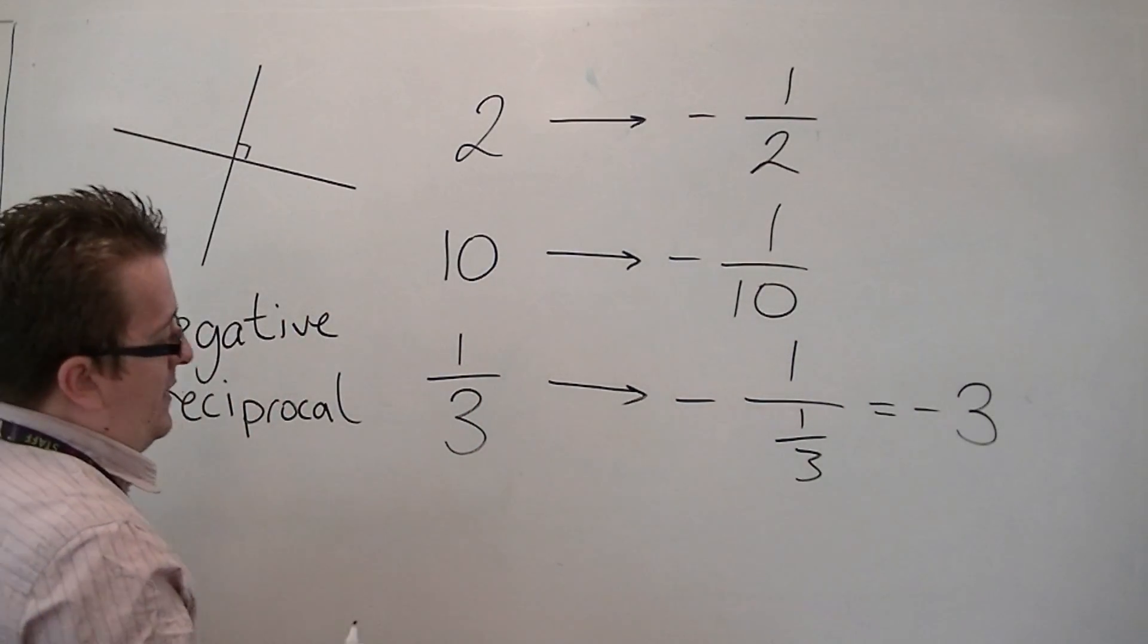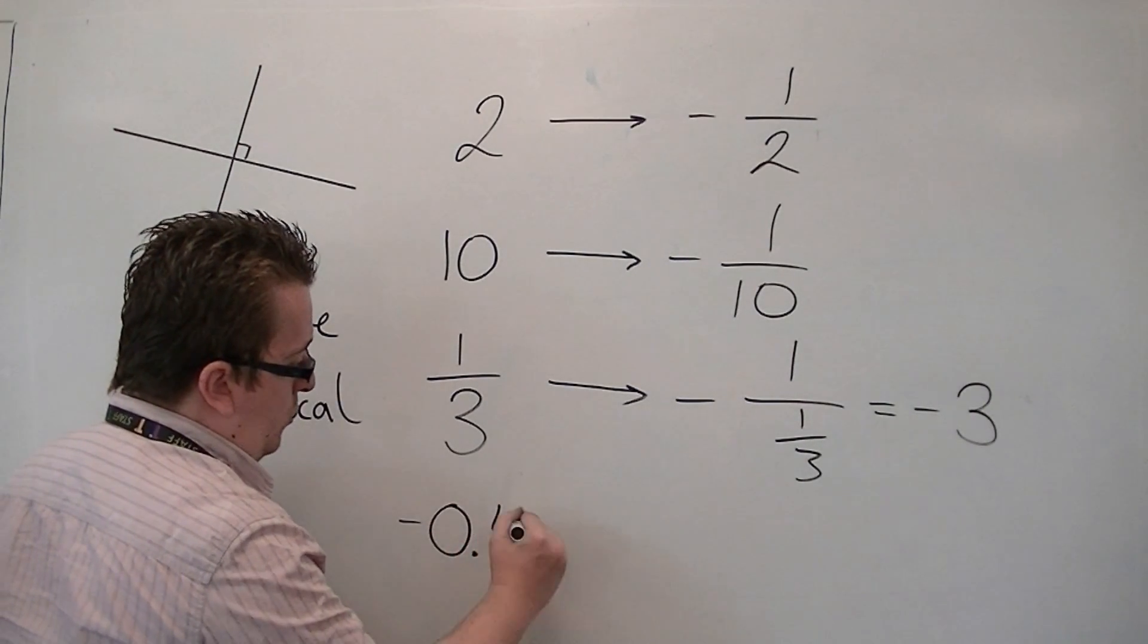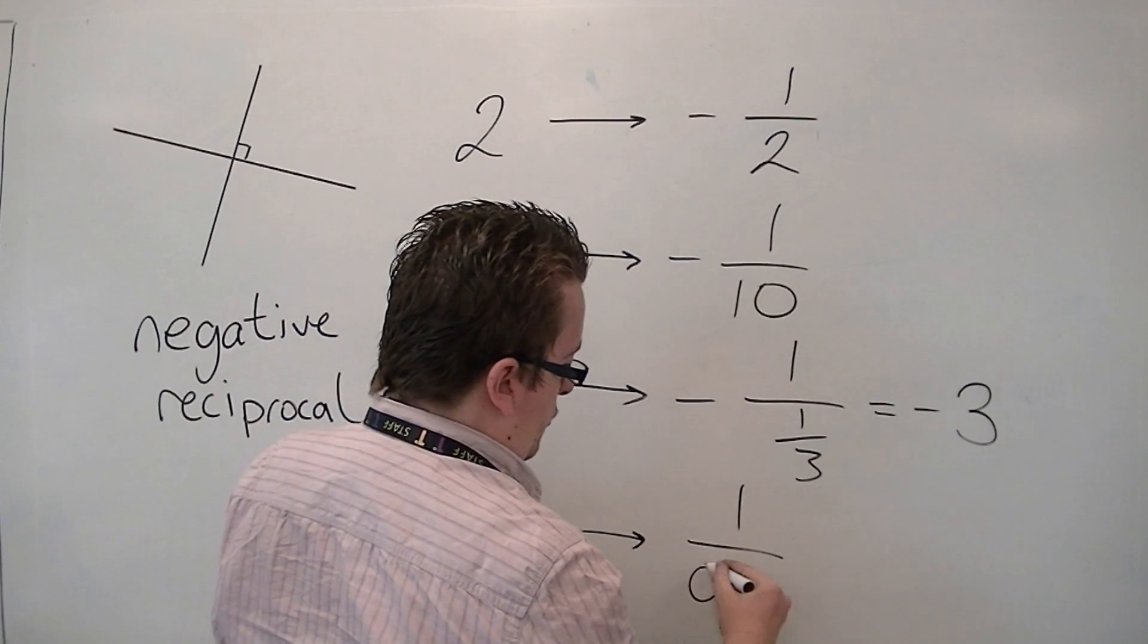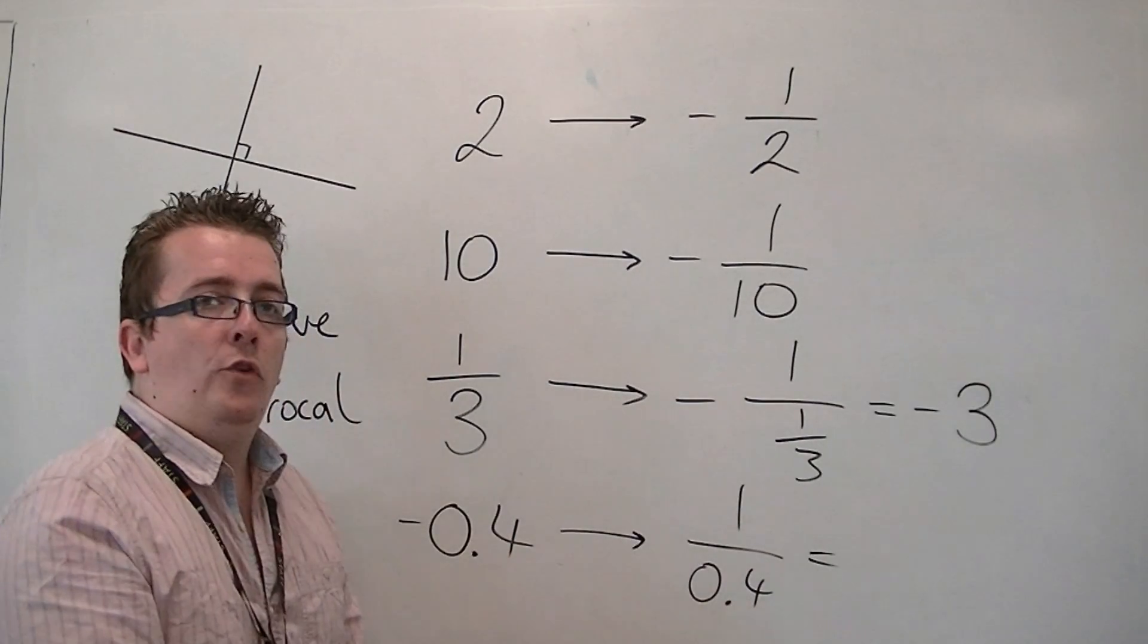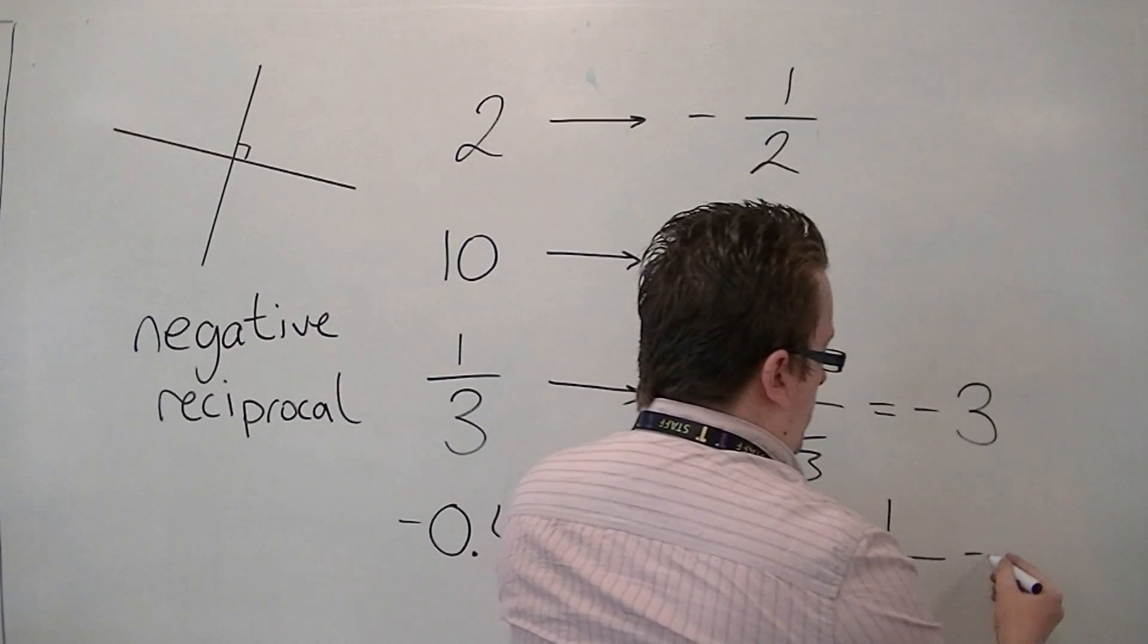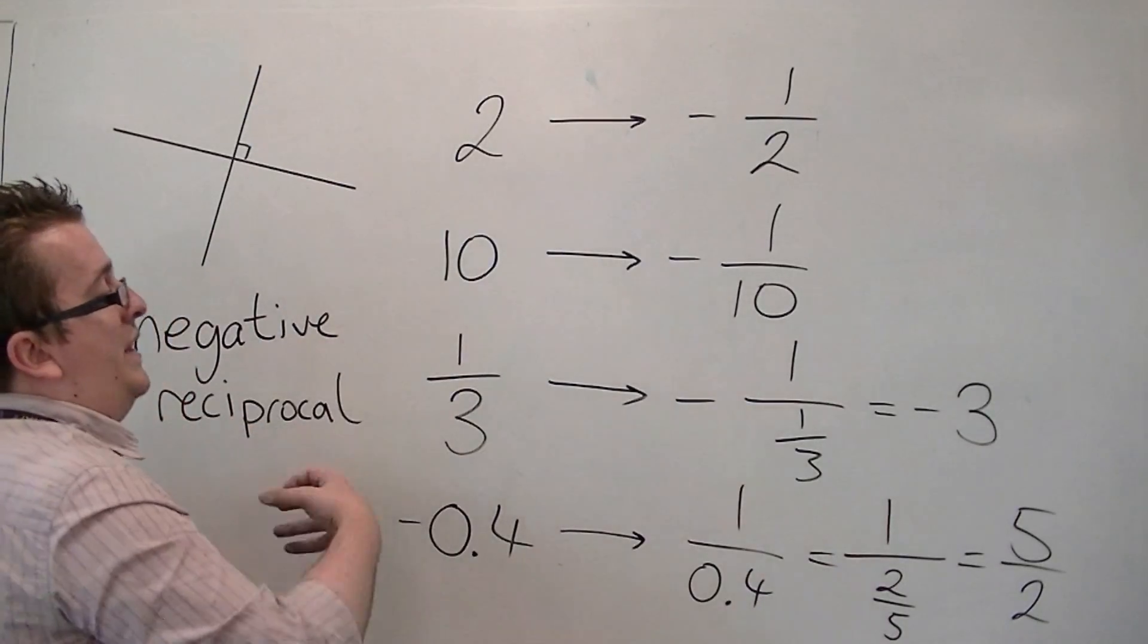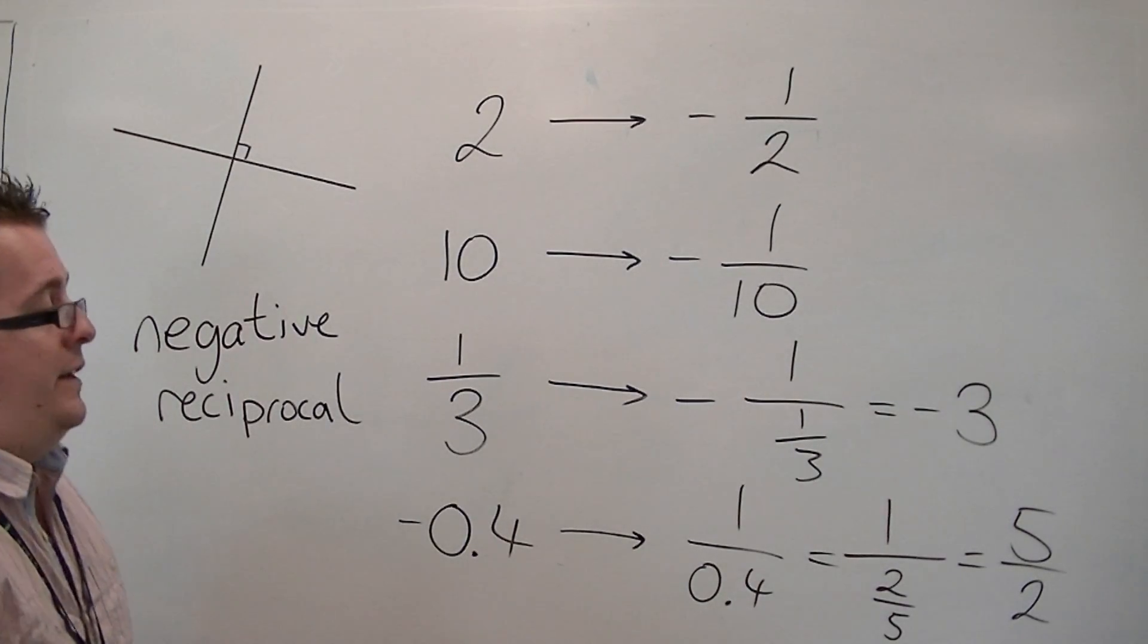And if you had, let's say, minus 0.4, for example, then the negative reciprocal of that would be positive 1 over 0.4. Now, 0.4 is 2 fifths. So, that is 5 halves. So, converting numbers into the negative reciprocals, it's something you need to be able to do. Remember, there's non-calculator, so you have to do it without.